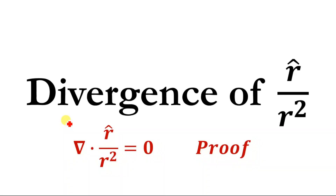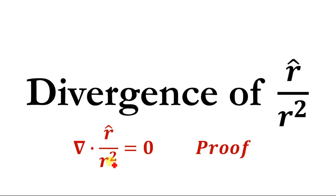Hello everyone. In today's video we will prove that the divergence of r unit vector over r magnitude squared is equal to zero — del dot (r̂/r²) = 0.